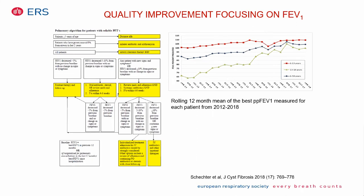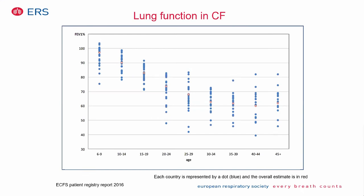Adjusting treatment based on lung function trends is very important. A key study — published in a CF journal — describes a center that was below average in lung function outcomes. They implemented a strict program: if a patient had a lung function drop of more than 5%, treatment was intensified and the follow-up interval was reduced from three months to six weeks. Over time, they improved the mean lung function across all age groups, demonstrating the value of proactive monitoring.